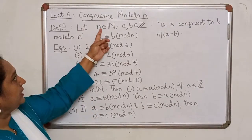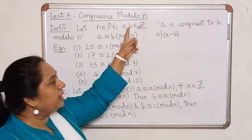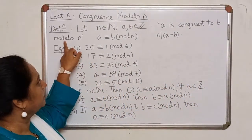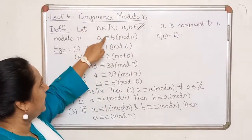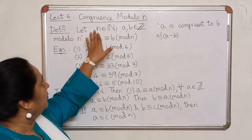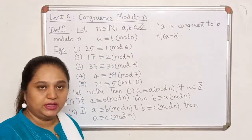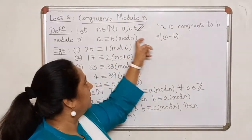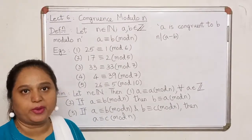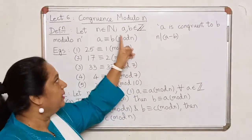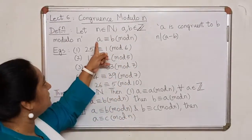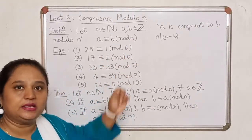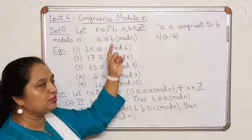We start with the natural number n and take any two integers a and b. We will say that a is congruent to b modulo n — written using this notation — provided n divides a minus b. If you wish to remember it: the number inside the bracket must divide the left-hand side minus the right-hand side. If this difference a minus b is divisible by n, then we say a is congruent to b modulo n.